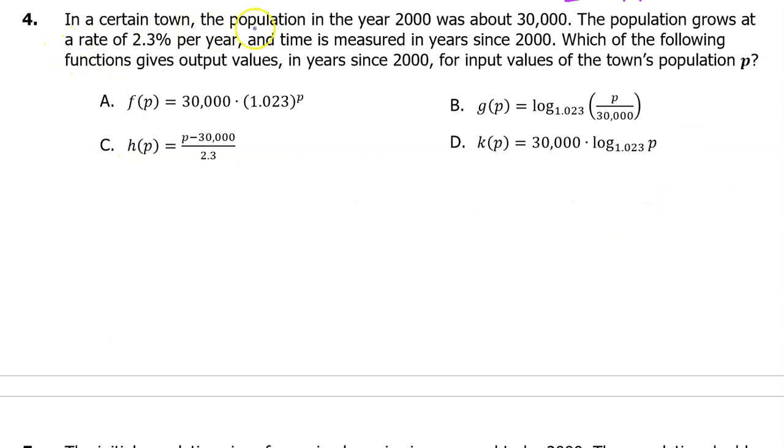Number four. In a certain town, the population in the year 2000 was about 30,000. The population grows at a rate of 2.3% per year, and time is measured in years since 2000. Which of the following functions gives output values in years since 2000 for input values of the town's population, P?